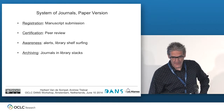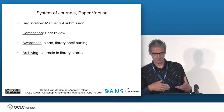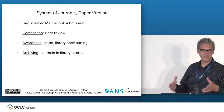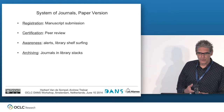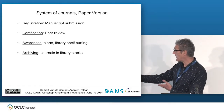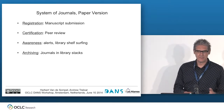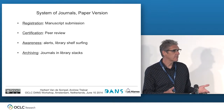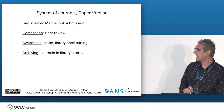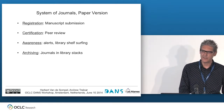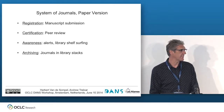When you look at the journal system in its paper-based form, all these functions were vertically integrated in the journal. Registration was done by manuscript submission. Certification was the peer review process. Awareness was basically walking through the shelves to find a journal of interest, with some library alerting mechanisms. And archiving — that was libraries keeping journals on their stacks.